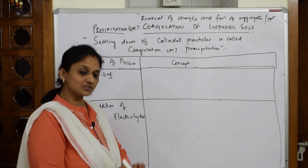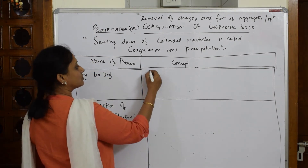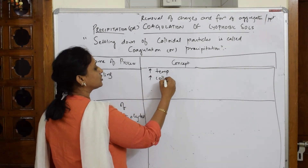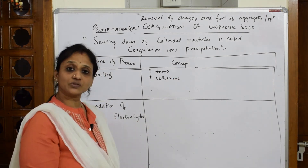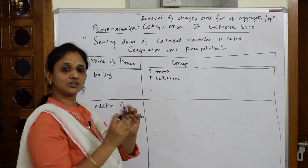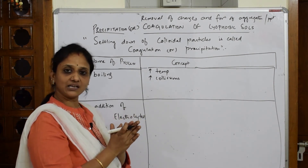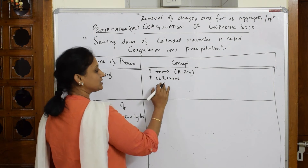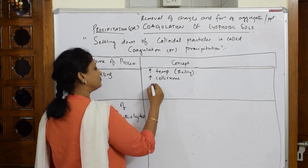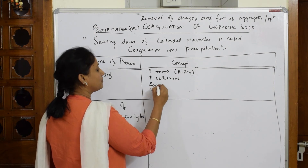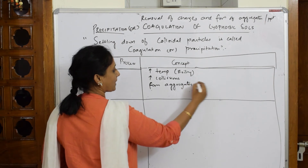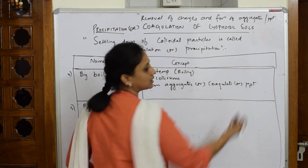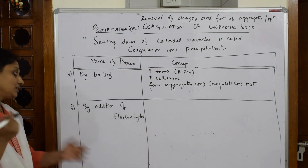The next method is boiling. When you boil or increase the temperature of a colloidal solution, collisions increase. When collisions increase, one dispersed colloidal particle hits another, they come together and aggregate, and finally form a precipitate. Increased temperature means increased collisions - when collisions increase, the particles form aggregates, coagulate, or precipitate out.